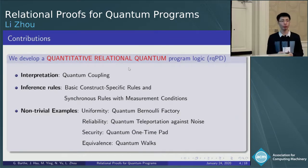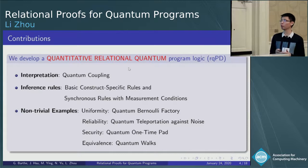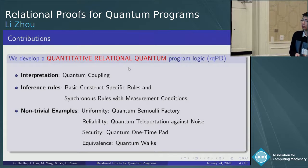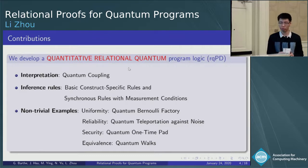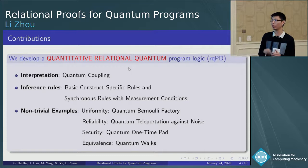And to show the effectiveness, we use our logic to verify several non-trivial examples, including the uniformity of quantum binary factory, the reliability of quantum teleportation against noise, the security of quantum one-time pad, and the equivalence of quantum walks with different coins.